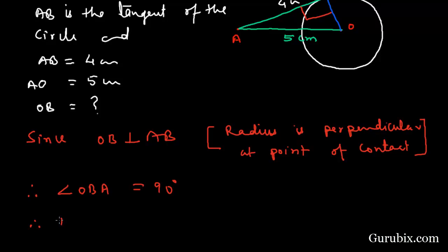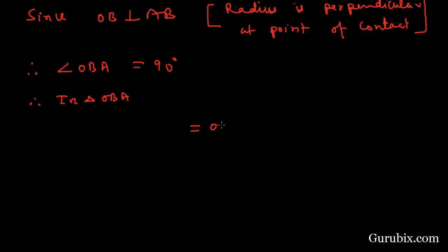In triangle OBA, we have OA as the hypotenuse, AB as the tangent, and OB as the radius. This result we have got from the Pythagoras theorem. AB is given 4 cm, we have to calculate OB, and OA is given 5 cm.